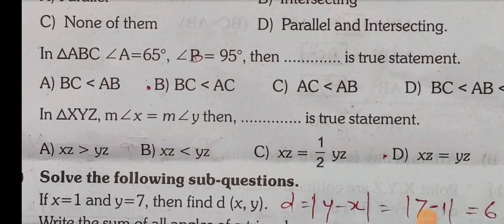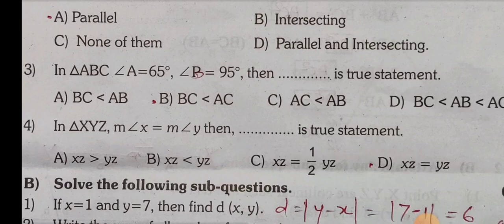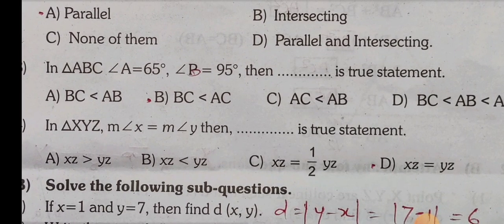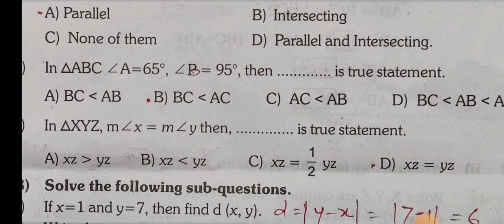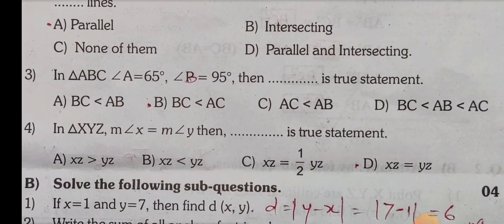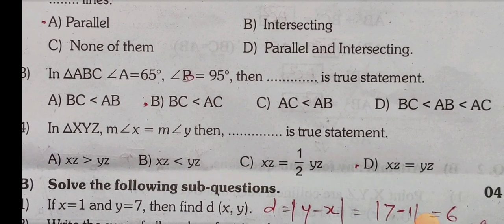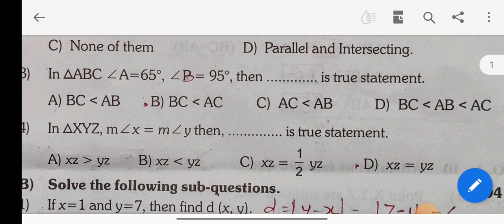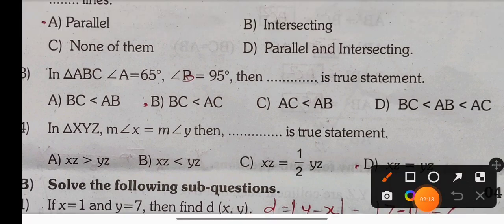Question 3 MCQ: In triangle ABC, angle A equals 65 and angle B equals 95. Which statement is true? Options: A) BC < AB, B) BC < AC, C) AC < AB, D) BC < AB < AC. The correct option is B: BC is less than AC.